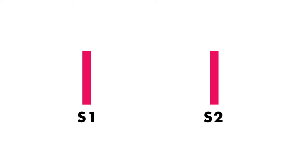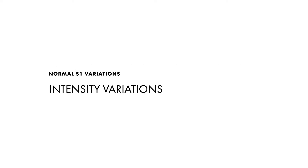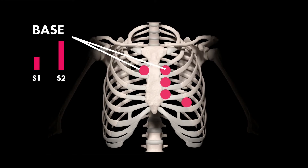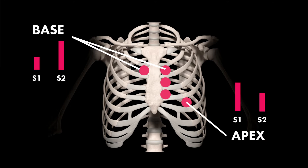These variations to the S1 heart sound can be normal, or they may be suggestive of underlying pathology. Normal variations in S1 include differences in intensity of the S1 heart sound when compared to S2 at different auscultation points. At the base of the heart, S1 is softer than S2, whereas at the apex, S1 is usually louder than S2.